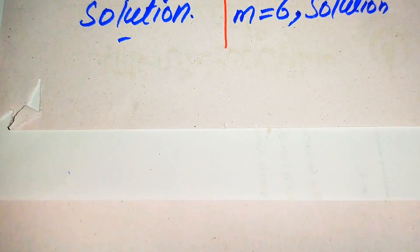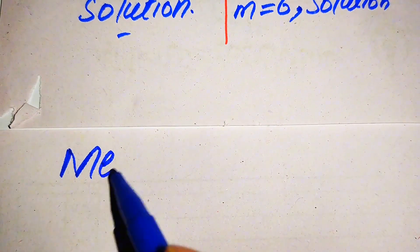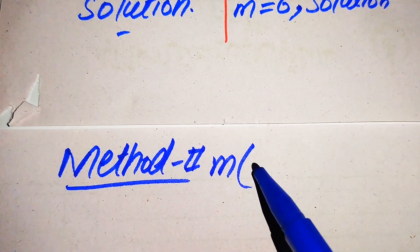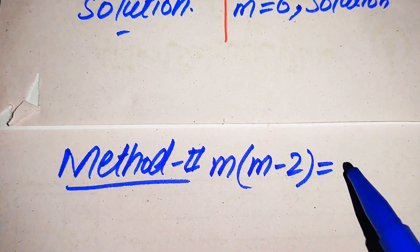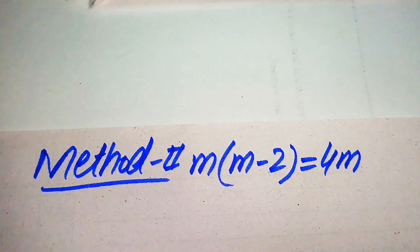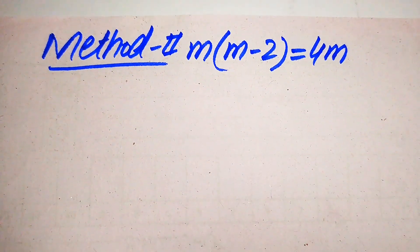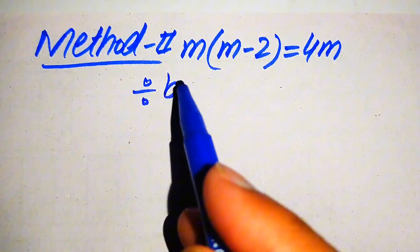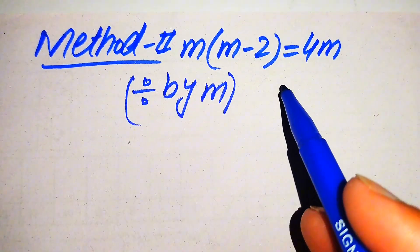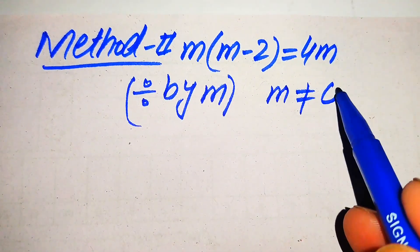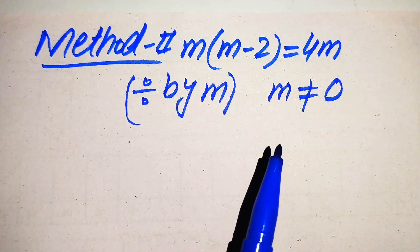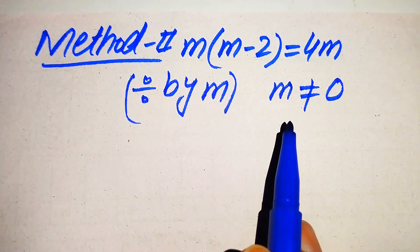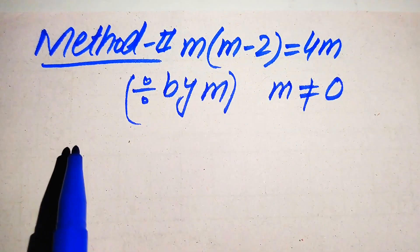In the first method we found two solutions. Now we solve this problem using the second method. We copy the given equation: m times of m minus 2 equals to 4m. In the second method we divide both sides by m, with the condition that m is not equals to zero, because dividing by zero is undefined.